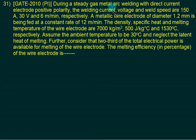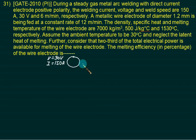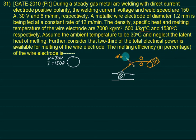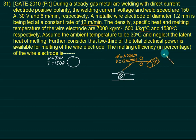During a steady gas metal arc welding with direct current electrode positive, welding current, voltage, and weld speed are 150 amperes, 30 volts, and 6 meters per minute. The metallic electrode diameter is 1.2 mm. The feed rate of this wire is 12 meters per minute, which is 12/60 meters per second. Data for the wire: density is 7000 kg/m³. These dimensions are in mm. Specific heat Cp is 500 J/(kg·K). The melting point Tm equals 1530°C, and ambient temperature is 30°C.